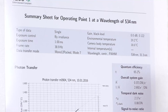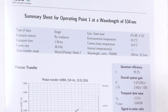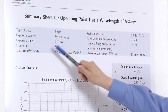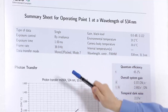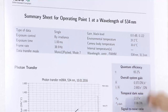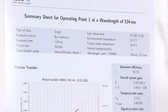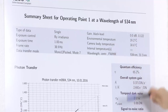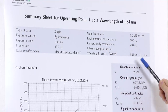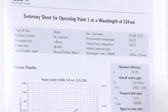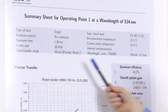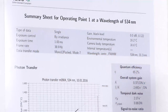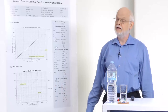The operating point means all the parameters necessary so that you know under which conditions these measurements have been taken. For instance, you can see that an exposure time of one millisecond was used, a frame rate of about 40 Hz, what kind of data transfer mode was used, what gain, what black level, what environmental temperature, what the camera body temperature was, and under which wavelengths these measurements have been done. The idea is that this block tells you that you can always repeat these measurements, as is good practice.